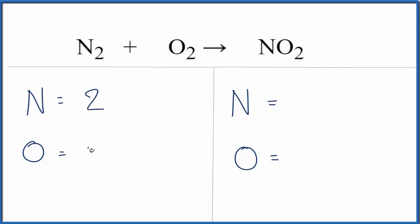We have two nitrogens and we have two oxygens. We have one nitrogen, and here we have two oxygens. So the nitrogens aren't balanced.